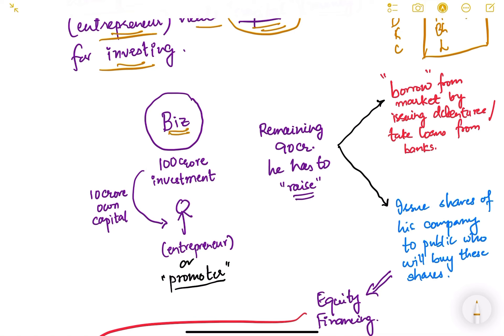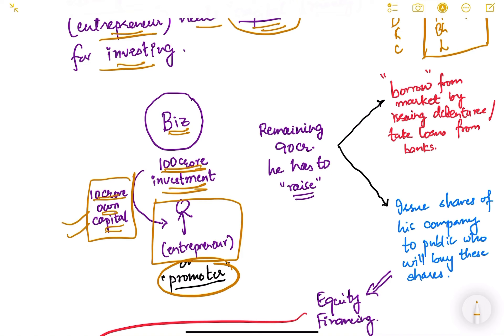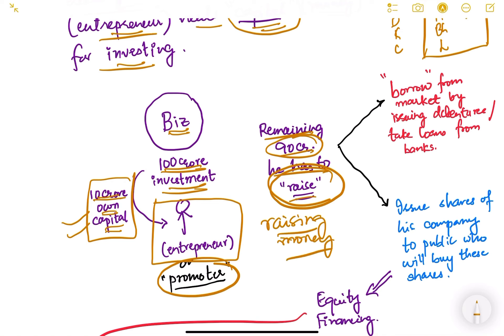Here I have explained this with a diagram. There is a business — say Amazon — that needs 100 crore rupees of investment. The entrepreneur who owns and promotes the company has his own 10 crore rupees. So where will he get the remaining 90 crore rupees? He has to raise that money — in Hindi we say 'market se paisa uthana' — he has to raise money from the market.